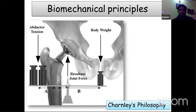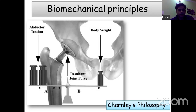The hip is a ball and socket joint with various forces acting on it. During single stance phase, body weight acts through the center of the symphysis pubis while the abductor mechanism exerts an equivalent force. To maintain stability, the hip joint produces a resultant force in the opposite direction — the joint reactive force. There are two lever arms: a longer one from the center of the head to the center of the body, and a shorter one from the abductor mechanism to the femoral head.